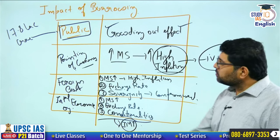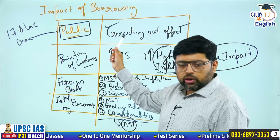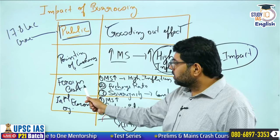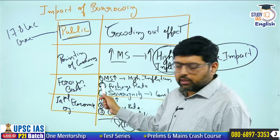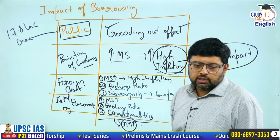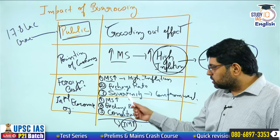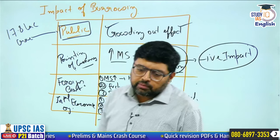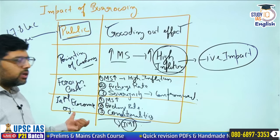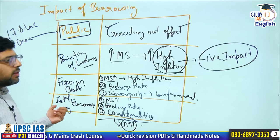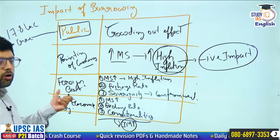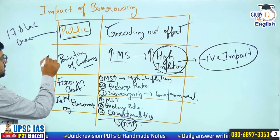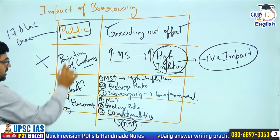In summary: when it comes to public — crowding out effect; printing of currency — high inflation; foreign government — three impacts; international economic organization — three impacts including conditionalities. Every borrowing comes at some cost, which is why governments take a combination. In India, printing of currency is not allowed, so the government uses the remaining three sources.